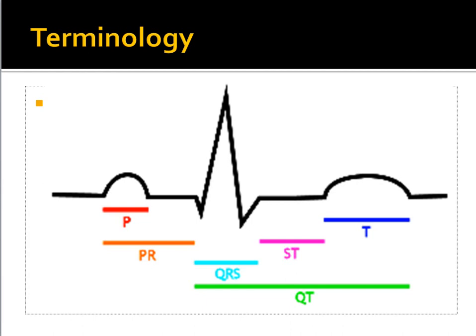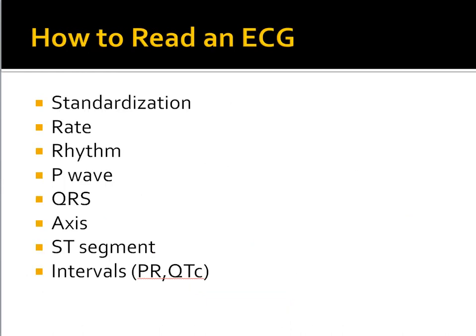Next, look at QRS duration. Axis is important but complex — assess for right axis, left axis, or extreme axis deviation. Most importantly, every physician should know the ST segment elevation or depression, which must be referenced to the TP segment — from the end of the T wave to the beginning of the P wave — because this is the only part of the ECG that is electrically silent. This is vital for the diagnosis of ischemic heart disease.